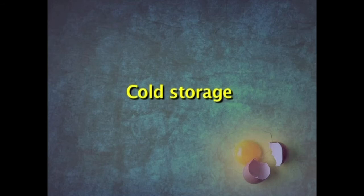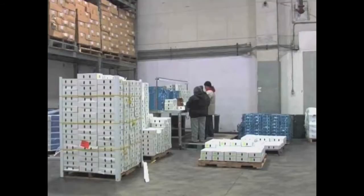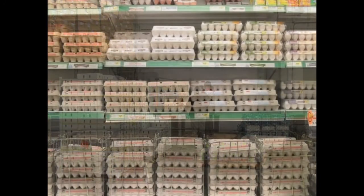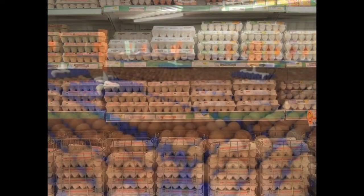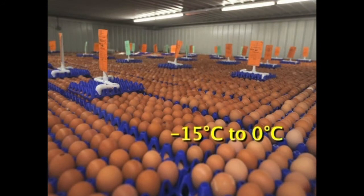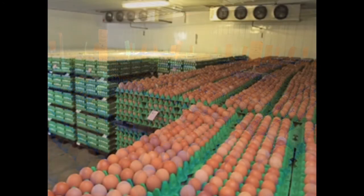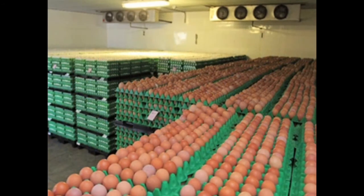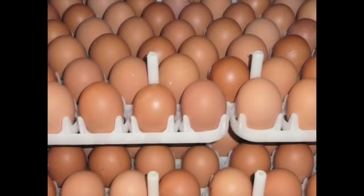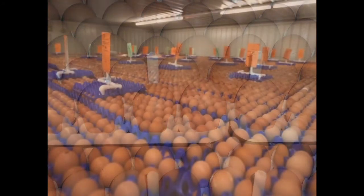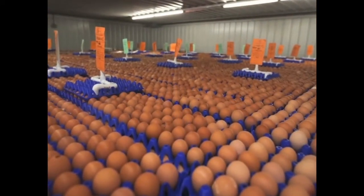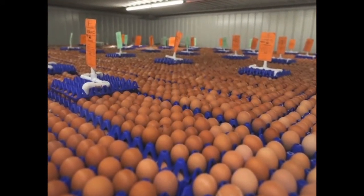Eggs can also be stored in cold storage commercially. Eggs are stored at minus 15 degrees centigrade to 0 degrees centigrade. However, in the cold storage room there should be controlled humidity, 85-90% air circulation, and it should also be free from objectionable odours. In this cold storage, eggs can be stored with good quality for as long as 6 months.